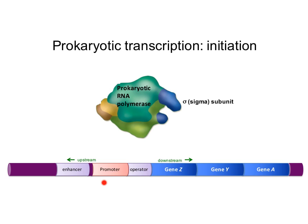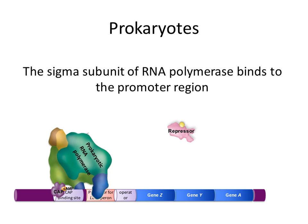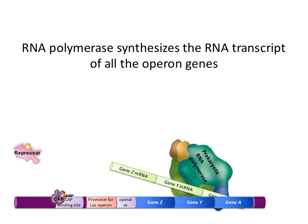Once the RNA polymerase binds to the promoter, it can start transcribing. Here, RNA polymerase uses the sigma subunit to find the promoter region. There are activator proteins that make binding more likely, and with no repressors present, the RNA polymerase is free to transcribe the coding region. In prokaryotes, this is an operon that has multiple genes for different proteins, and all of those genes are transcribed at the same time.